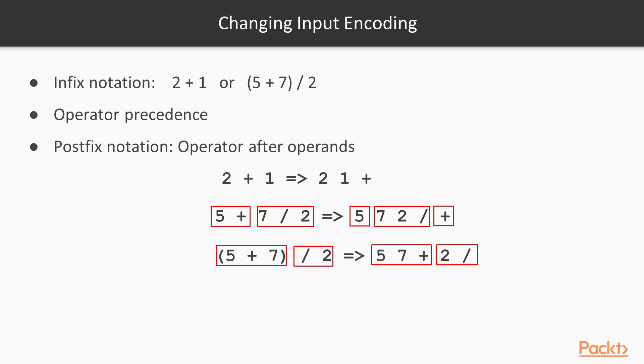When we have brackets, this changes the evaluation order. 5 plus 7 becomes 5 7 plus, and the result is divided by 2.